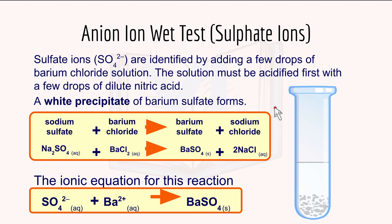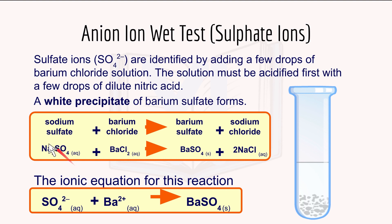Here's the anion wet test. For sulfate ions, SO4²⁻ are identified by adding a few drops of barium chloride solution. The solution must be acidified first with a few drops of dilute nitric acid. A white precipitate of barium sulfate forms. The ionic equation is: SO4²⁻ (aq) + Ba²⁺ (aq) → BaSO4 (s). Barium sulfate is insoluble, which is why it forms the solid precipitate. You cancel out the spectator ions - in this case Na⁺ and Cl⁻.